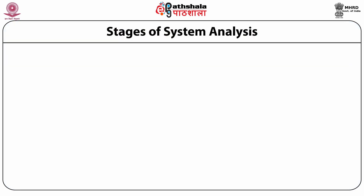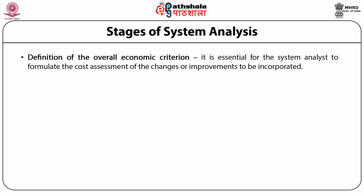We will now look at the seventh step in the system analysis process, which refers to definition of the overall economic criteria. It is very essential that the system analyst formulates the cost assessment of the changes or improvements that have to be incorporated. This process needs a critical study to assess how important the changes and investment are and how they will affect the organization.